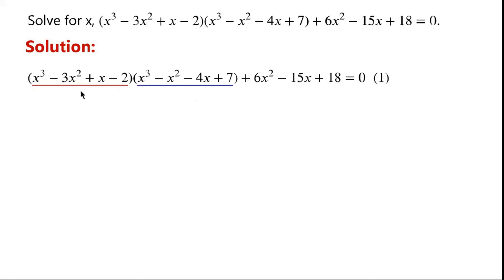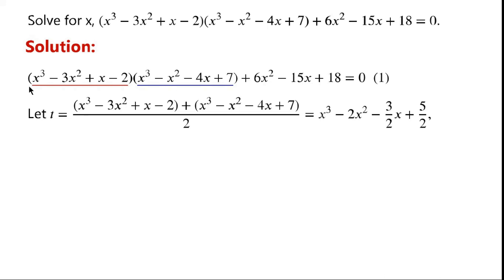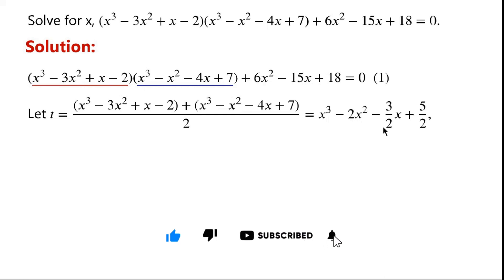The given equation is a polynomial equation of degree 6. We might be able to solve this using the rational root theorem if the equation has rational roots, but it might be computationally intensive. So we'll use a simpler method. We let t equal the expression underlined in red plus the expression underlined in blue over 2, which simplifies to x³ - 2x² - (3/2)x + 5/2.